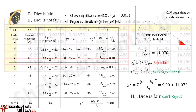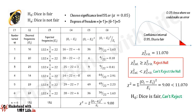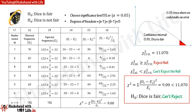Now compare the calculated value of chi-square with the critical value of chi-square referred from the chi-square distribution table. If the calculated value is equal to or greater than the critical value then reject the null hypothesis. If the calculated value is less than the critical value then we cannot reject the null hypothesis. Here the calculated value of chi-square is 9, which is less than the critical value of 11.070, hence we cannot reject the null hypothesis.